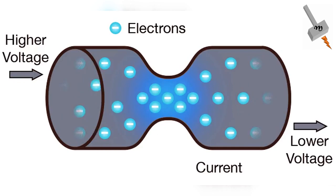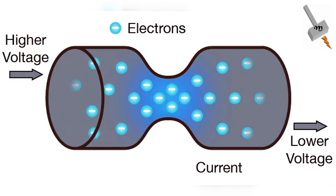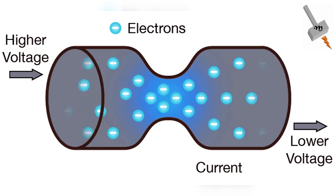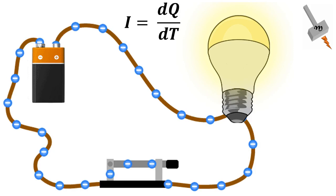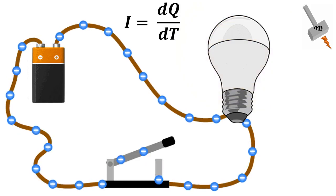In terms of physics, if we try to define the electric current, it is the amount of charge that passes through an electric conductor or semiconductor in a defined period of time. Or in other words, the rate of change of charge per unit time is electric current.